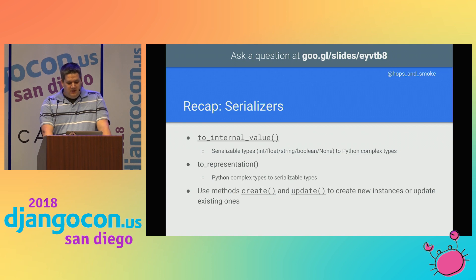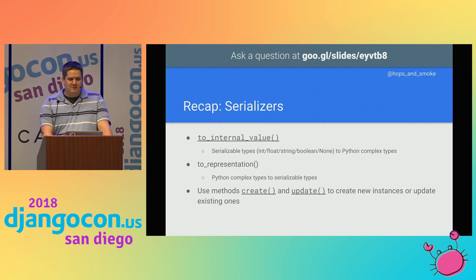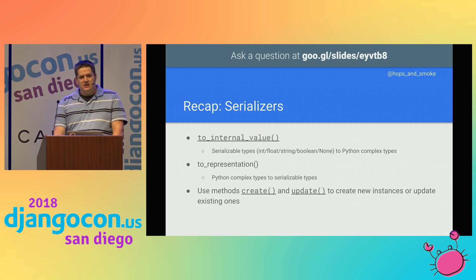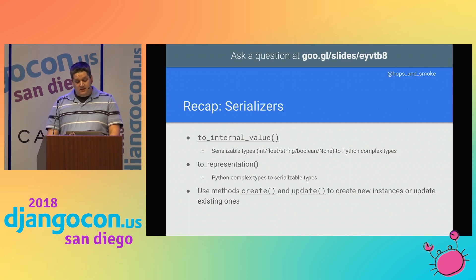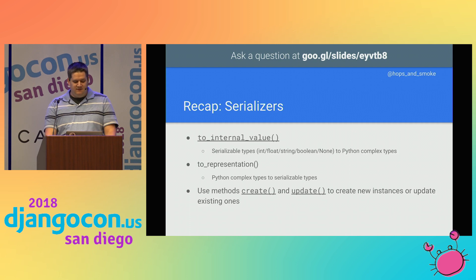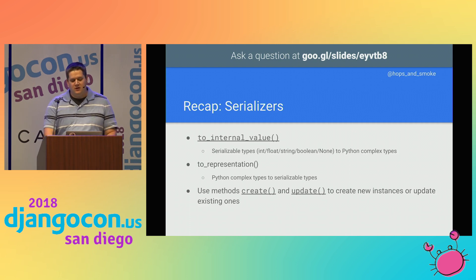The serializers then use either the create or update methods to save those fields into the database using your Django models. to_internal_value takes serializable types like numbers and strings and turns them into Python types like datetimes and decimals — you can build a translator for anything. And to_representation does the same thing in reverse. Typically you won't have to modify create and update unless you're modifying multiple models in the same serializer, which I'm going to demonstrate a little bit later.